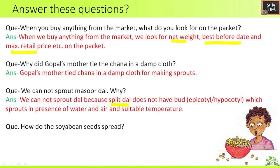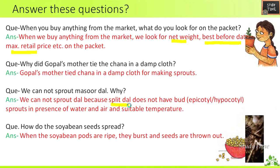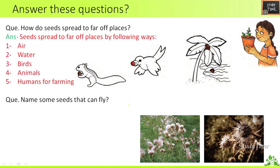Why can we not sprout masoor dal? Because split dal does not have a bud, so we cannot sprout the split one. How do the soya bean seeds spread? When the soya bean pods are ripe, they burst and seeds are thrown out.